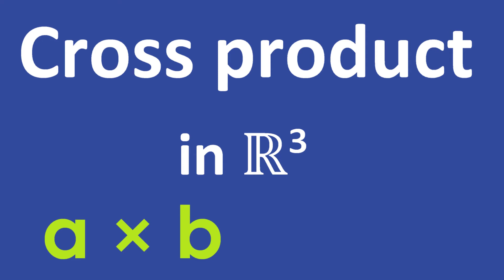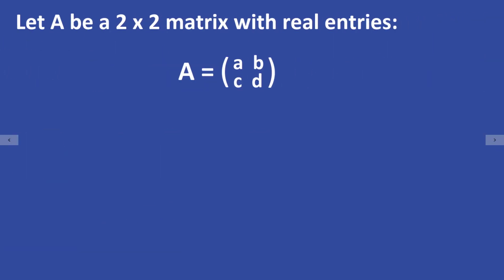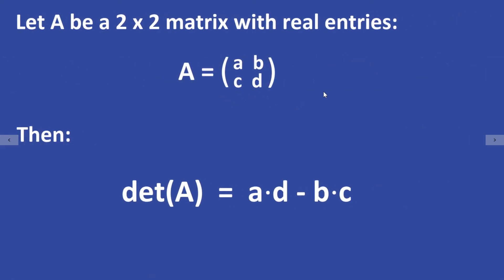In this video I will talk about the cross product in R3, but first I want to remind you how the determinant of a 2×2 matrix can be computed. Let A be a 2×2 matrix with real entries A, B, C, and D. Then the determinant of A is equal to A times D minus B times C.